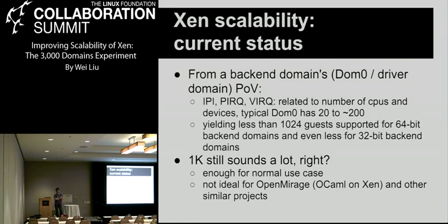We certainly have some use cases that can easily hit this limit. For example, the OpenMirage project, which is an incubator project, tries to spawn as many VMs as possible to serve the external world, so it can easily hit this limit. So we are trying to look into the future and prepare for the next step of the Xen world.